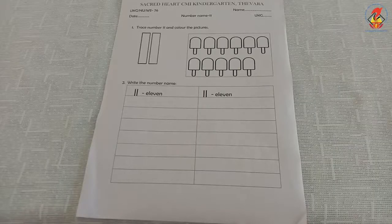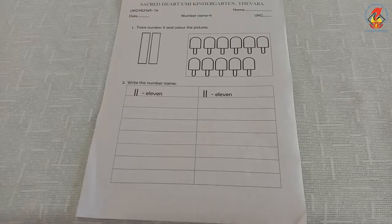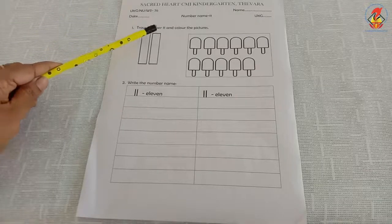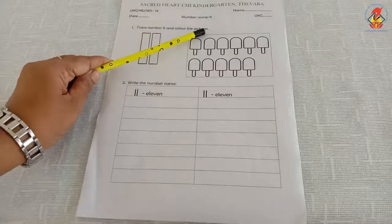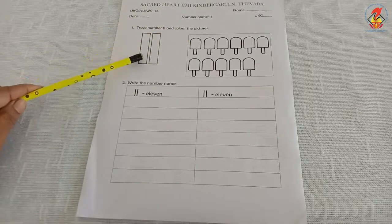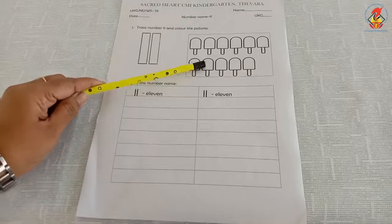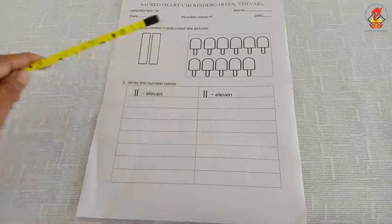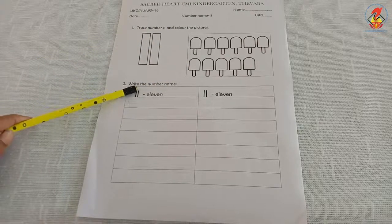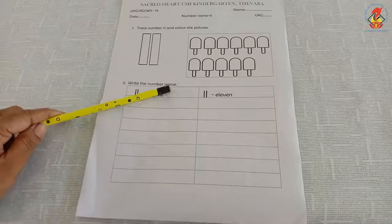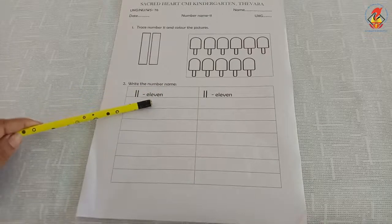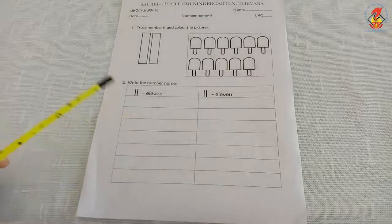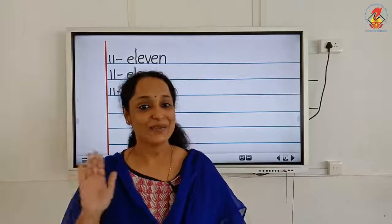Children, we have a worksheet for number name 11. The first question is trace number 11 and color the pictures — here you have to trace the number and color the picture. The second question is write the number name — write the number and number name in the given boxes. See you in the next class. Bye.